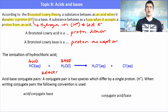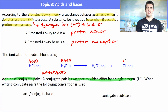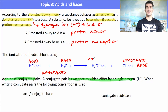On the reactant side we always have the acid and base. On the product side we have what's referred to as the conjugate pair — the species that differs by a single proton from the reactant side. HCl is our acid and Cl⁻ is its conjugate base. The base, water, has a conjugate acid which is the hydronium ion H₃O⁺.